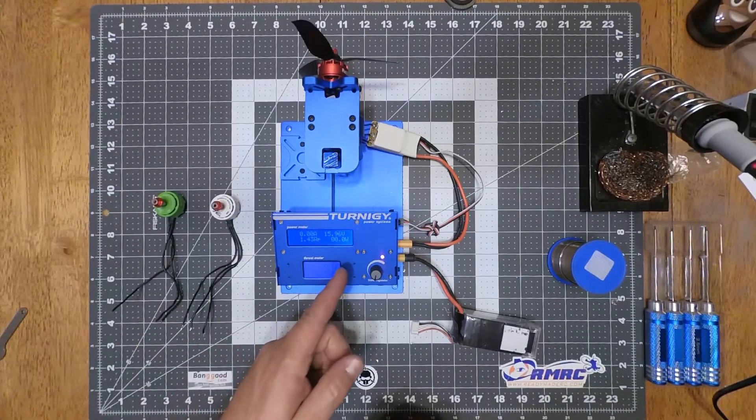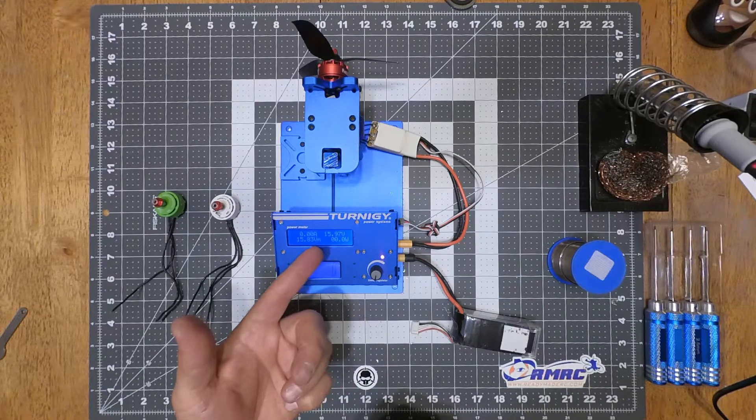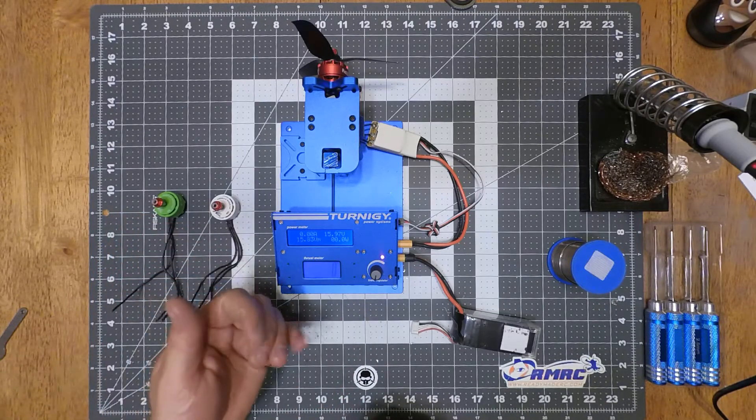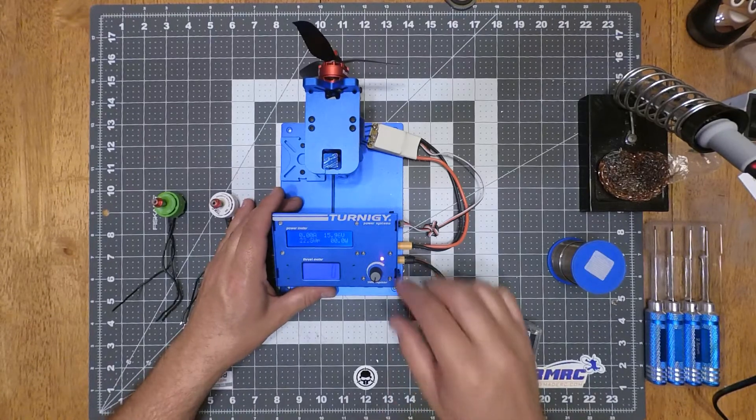Okay, obviously this one's already at a little bit of a disadvantage because it's already at 16 volts, 15.9. So we'll spool this one up. See what this one's running.